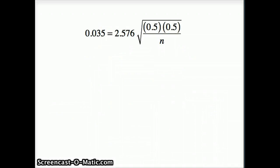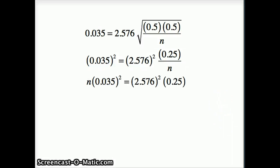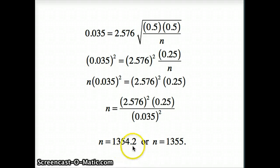So we're going to do some algebra. Step 1, square both sides. Squared, squared, lose the square root. Step 2, multiply n. Step 3, divide both sides by 0.035 squared. And then do the computation. We have 1354.2.